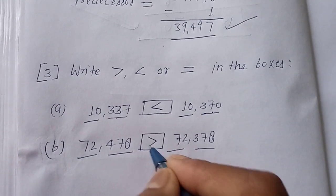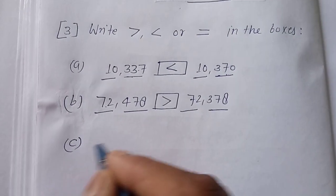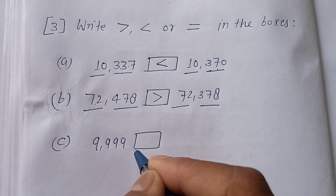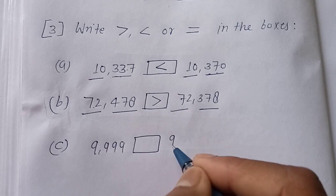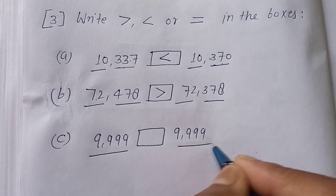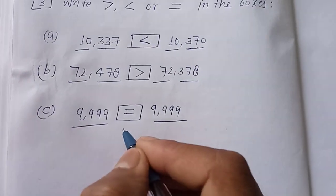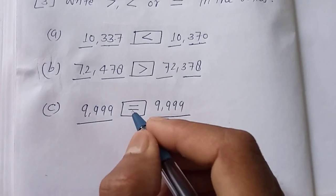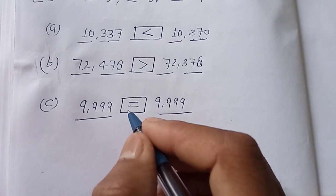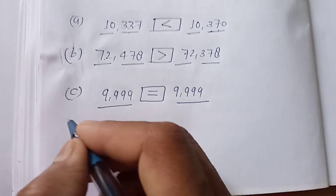We write the greater than symbol in the box. Question C is: 9,999 — box — 9,999. We can see both numbers are equal, so we write the equal to sign in the box. You can solve the remaining questions; if you have difficulty you can ask in the group. Now question number 4 is: